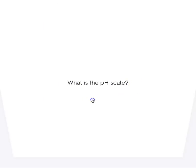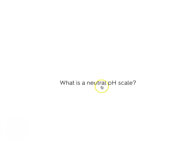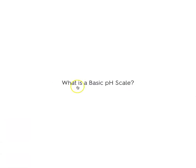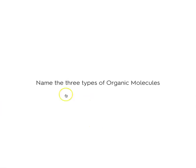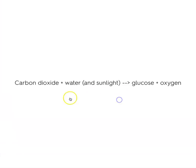What is the pH scale? It measures how acidic or basic a substance is. What is an acidic pH scale range? 1 to 6. What is a neutral pH? 7. What is a basic pH scale range? 8 to 14.